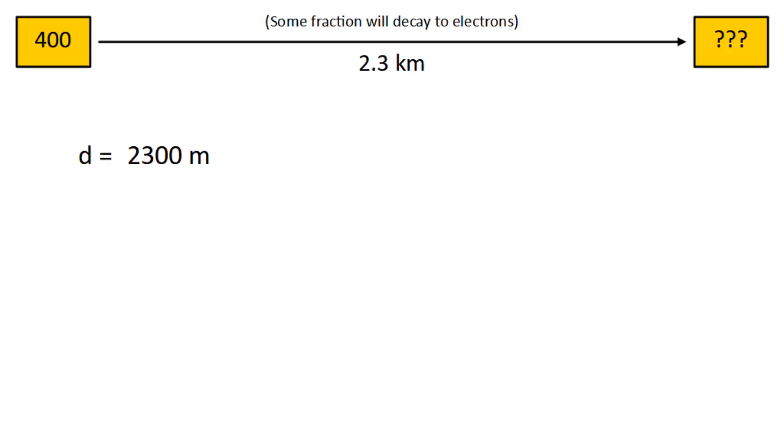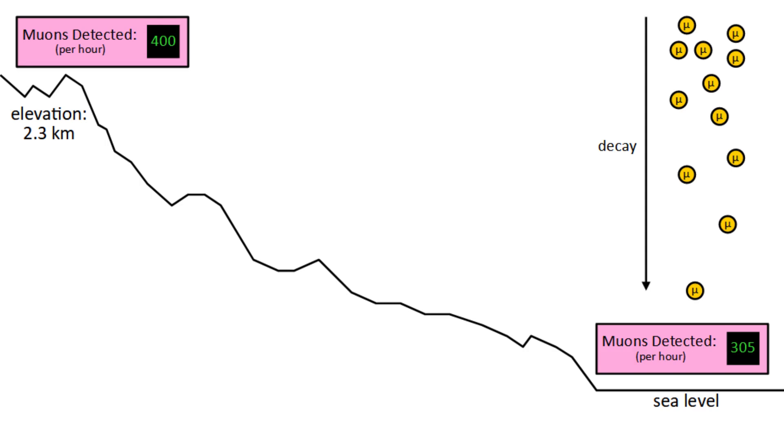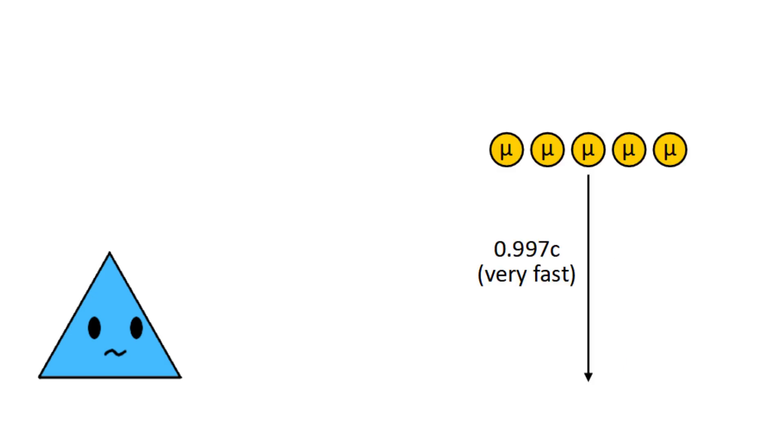So what would you expect to find at sea level? Well you know it's going to be less than before, since the muons decay as they move downwards, so not as many remain the further down you go. To calculate the expected number, we need to determine what fraction of those will decay to electrons as they cover 2.3 kilometers. That's the same as 2300 meters, and their velocity 0.997 c is about 299 million meters per second, so the time it takes is 7.7 microseconds. Dividing this by the half-life, we find that it's approximately 5 half-lives, so the number of muons gets cut in half 5 times, which leaves only 3% of them remaining. Therefore, you might expect to detect 12 muons per hour. But in practice, the detector actually finds 305 muons per hour, 76% of the original amount. So how do this many of them survive the trip?